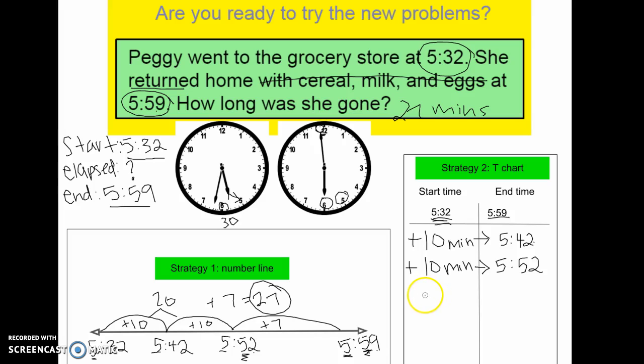And that takes me from 5:42 to 5:52. And again, if I add 10 more minutes, that would put me at 5:62, and that's gone too far. I'm trying to get to 5:59, so I'm going to count up again from 2 to 9, because my minutes are in the right place. I just need to get that one place up. So 2, 3, 4, 5, 6, 7, 8, 9, plus 7 more minutes takes me to 5:59. And I always like to circle it when I reach my end time, so I know I'm done.